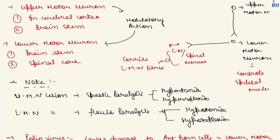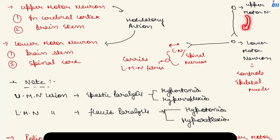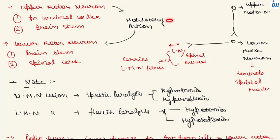Now we will discuss the concept of upper motor neuron and lower motor neuron. The upper motor neuron makes a synapse with the lower motor neuron. The upper motor neuron is present in the cerebral cortex and in the brain stem, and the lower motor neuron is present in the brain stem as well as the spinal cord. The upper motor neuron is continuously stimulating and controlling the lower motor neuron.